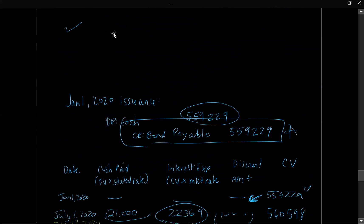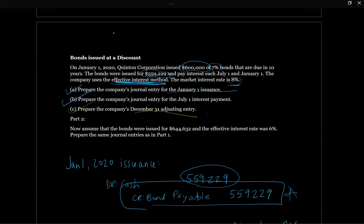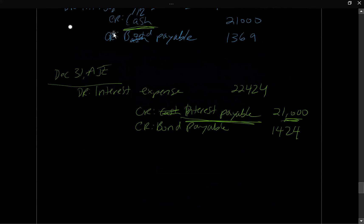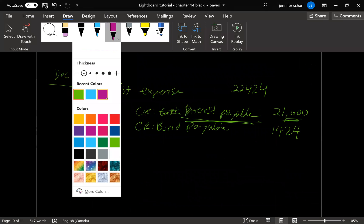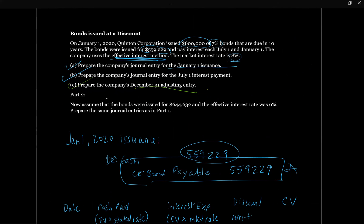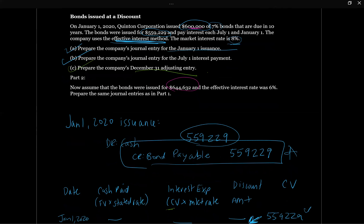That completes part one. Part two assumes the bonds were issued for $644,632 with an effective interest rate of 6% — prepare the same journal entries. This means the bonds are issued at a premium, because we're receiving $644,632, which is more than the $600,000 face value. Let's look at how we amortize a premium.